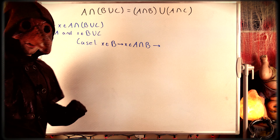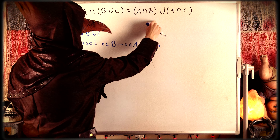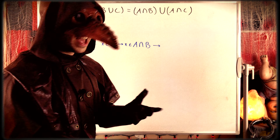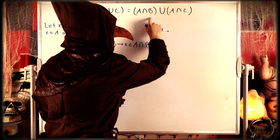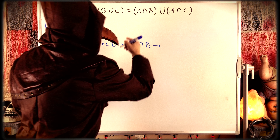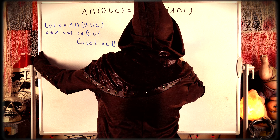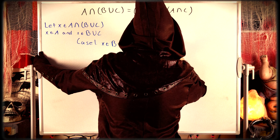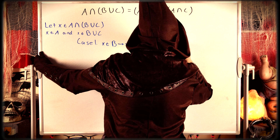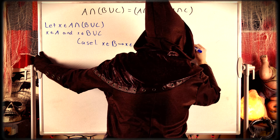Thus by definition of set union, if x is an element of A intersect B, then x is an element of A intersect B union A intersect C. This would imply that x, by definition of set union, is an element of A intersect B union A intersect C.